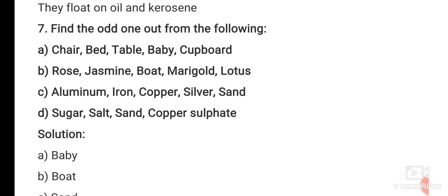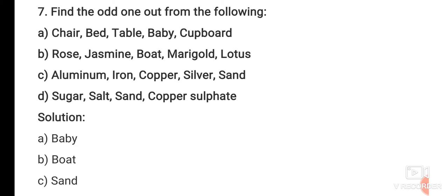You have to find the odd one out. Odd one out means which does not match the other objects or things given. Like chair, bed, table, baby, cupboard. You can see chair, bed, table, and cupboard are all made of wood. So baby is odd, and baby is the answer.